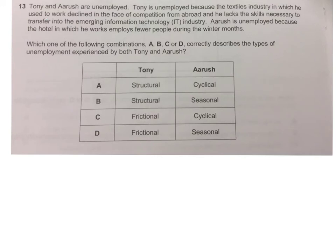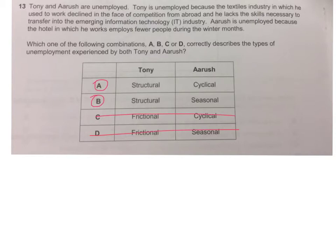Question number 13 is a really easy one. If you can't do this one, you just don't know your different types of unemployment. Tony is unemployed because the textiles industry in which he used to work declined in the face of competition — that means he hasn't got the right skills, so quite clearly he is structurally unemployed. So it can only be A or B. Arush is unemployed because the hotel in which he works employs fewer people during the winter months — that is obviously seasonal unemployment. So the only answer it can be is B, since cyclical would be to do with demand, and frictional is when you're in between jobs.